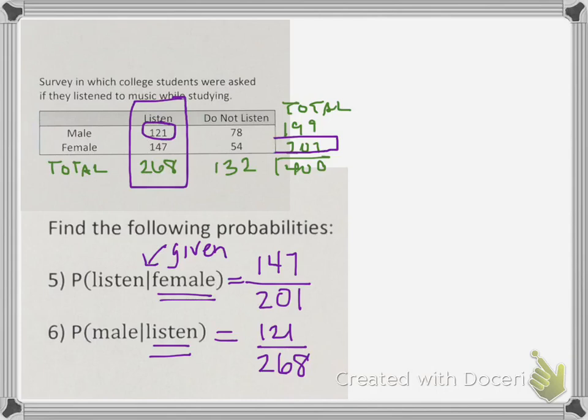So I hope this answers your questions on how to find probabilities from a contingency table, also known as a two-way table. If you have any additional questions, don't be afraid to come see us in the learning commons. Thank you.